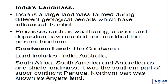Now let me tell you about Gondwana land. The Gondwana land includes India, Australia, South Africa, South America, and Antarctica — all as one single landmass. This Gondwana land was the southern part of the supercontinent Pangaea, existing from some 225 to 70 million years ago.